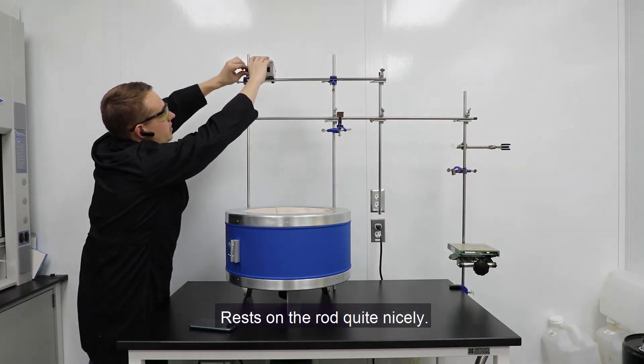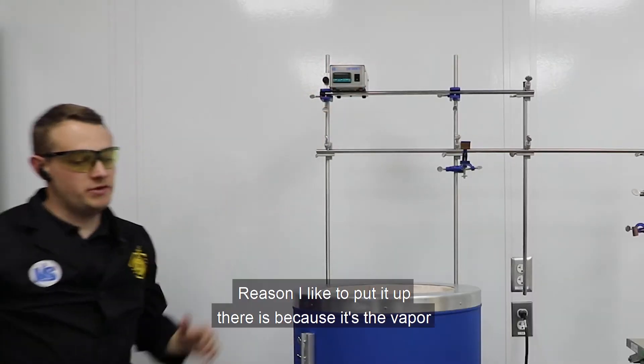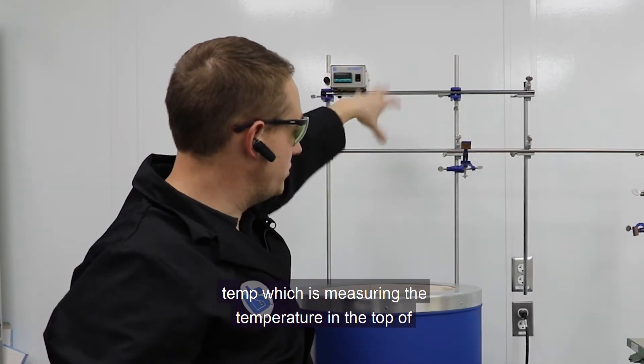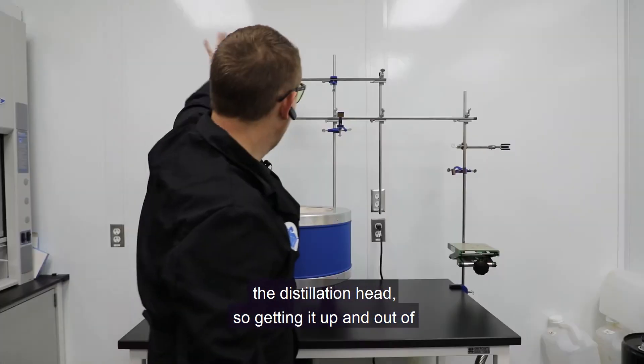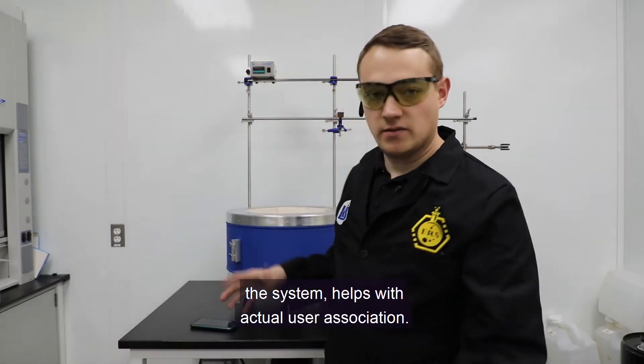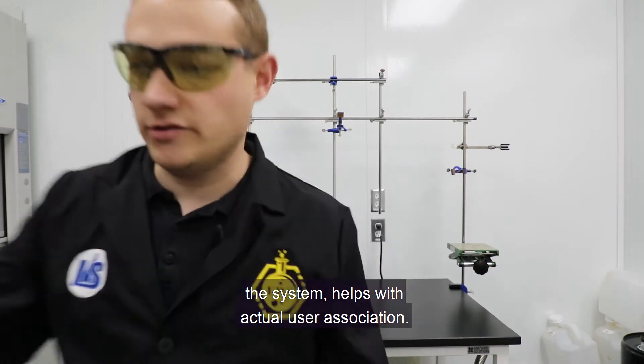It rests right on the rod quite nicely. The reason I like to put it up there is because it's the vapor temp, which is measuring the temperature at the top of the distillation. So getting it up and out of the way, but in a spatial location that makes sense on the system helps with actual user association.